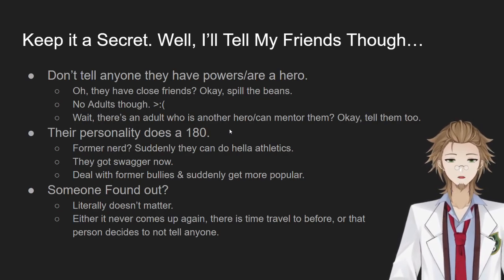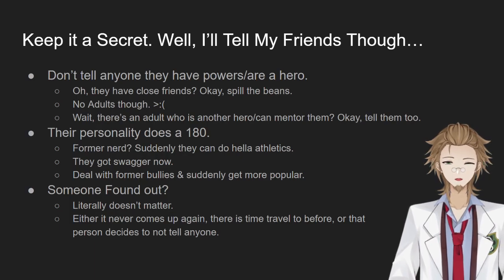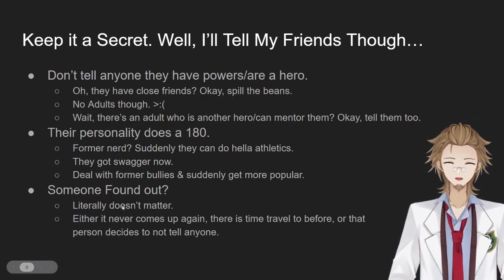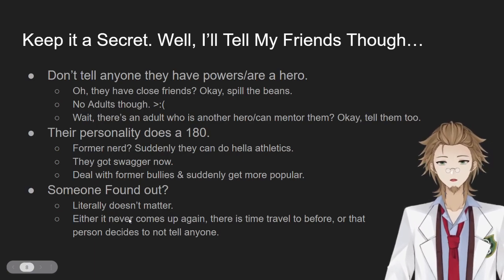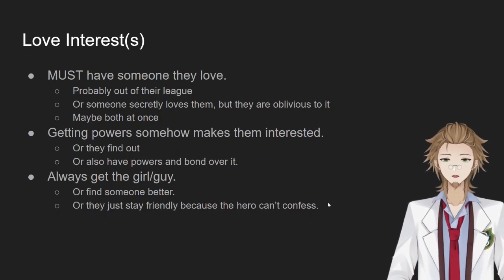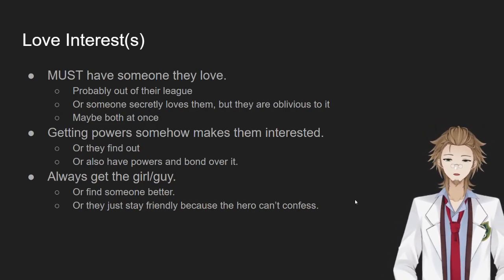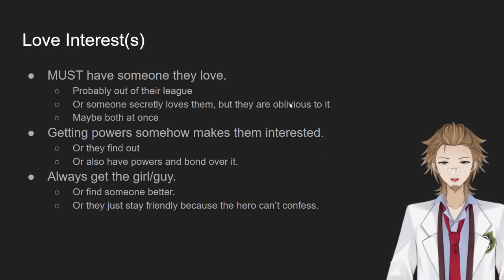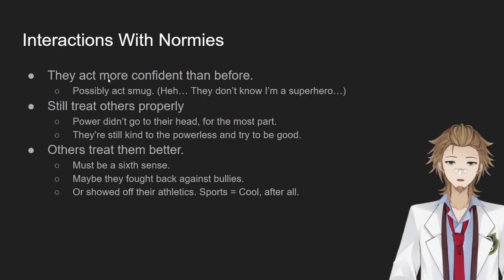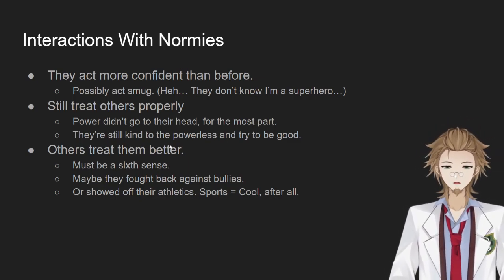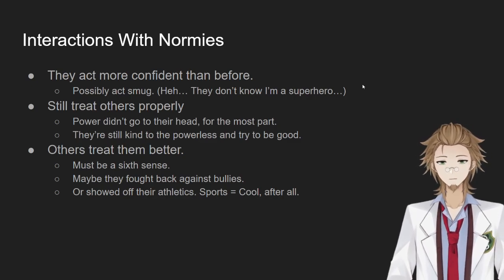And then Peter Parker's personality does a 180 — he was just a normal nerd, but then he's able to stand up to his bullies because he's stronger and coordinated. He's just a brighter person because of it. And literally someone found out — Mysterio finds out, tells the world, and then Peter just goes back in time with Doctor Strange and undoes all that. Love interest: we have Mary Jane or MJ in the newest one, who he thinks is out of his league, but then something happens, they click and they get together. Interaction with normies: he's still a person of the people, still trying to protect New York and its residents, and all the people treat him a little bit better because he acts better.